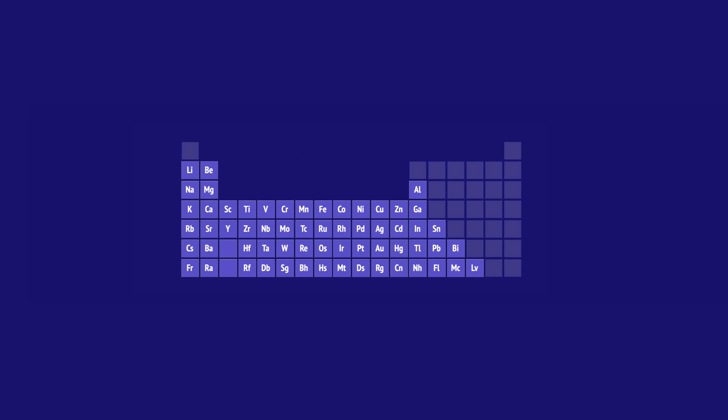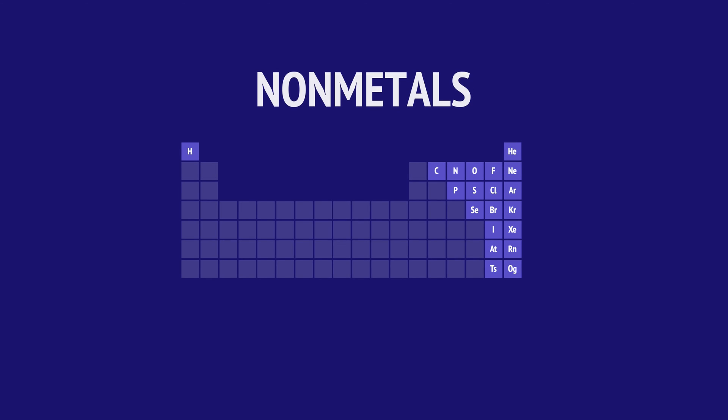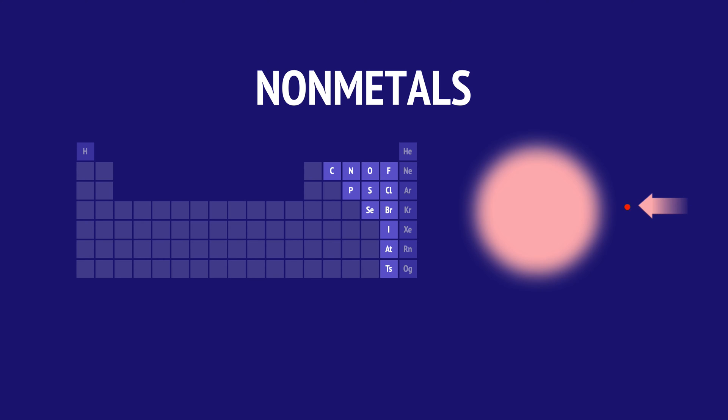Ionic bonding occurs between metals that tend to lose valence electrons and nonmetals that tend to gain valence electrons.